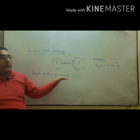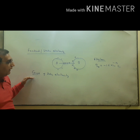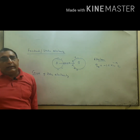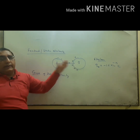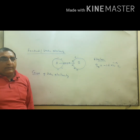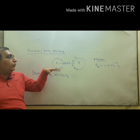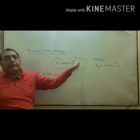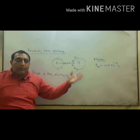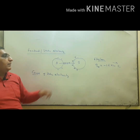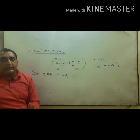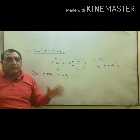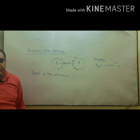So the cause of static electricity: on rubbing, transfer of electrons takes place from the loosely bound surface to the tightly bound surface. Where electrons go, that represents negative charge; where electrons leave, that body has positive charge. Positive charge means deficiency of electrons and negative charge means presence of excess electrons.